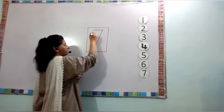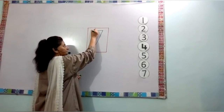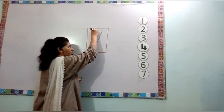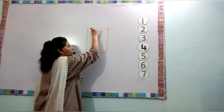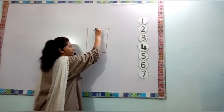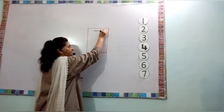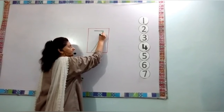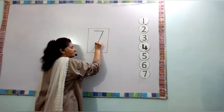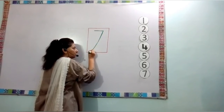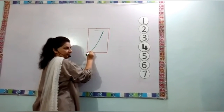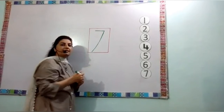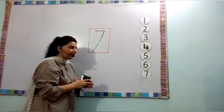Again I am writing. To write number 7, starts from the top. Draw a sleeping line, then continue. Draw a diagonal line down to the bottom. This is the number 7.